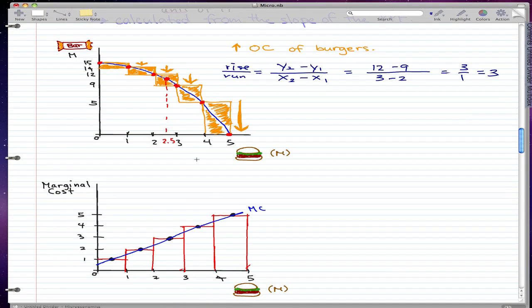And what do you know? When marginal cost is 3, then the marginal cost curve hits a marginal cost of 3 when we're making 2.5 million burgers.